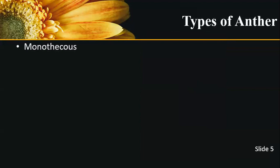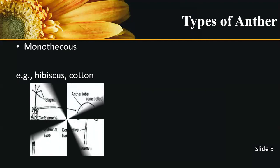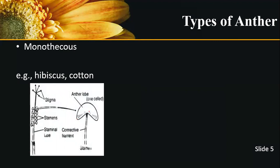Anthers are of two types based on the number of lobes. An anther having only one lobe is called monothecous. For example, Hibiscus and cotton have only one lobe, so they are called monothecous. In one lobe there are two chambers of microsporangium tissue. All members of the Malvaceae family have monothecous anthers.